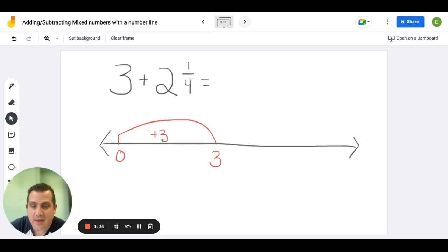Then I'm going to look at my next whole, which is 2. So my next jump is going to be another 2, which will take me to 5. So I've now added my two wholes - my 3 wholes and my 2 wholes.